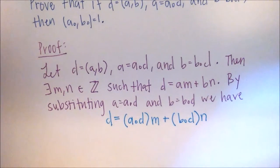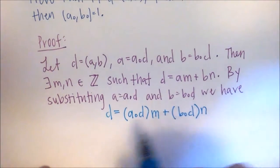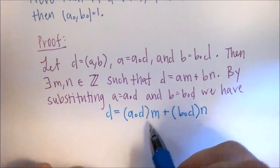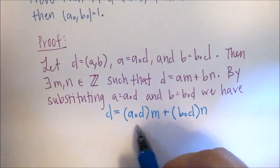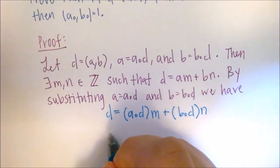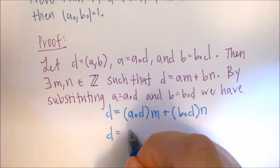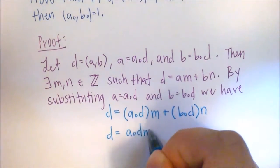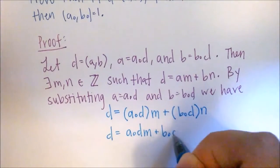Okay, and since these are integers and we know that integer multiplication is associative, we can drop these parentheses. So we can just say D equals A0DM plus B0DN.